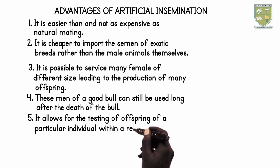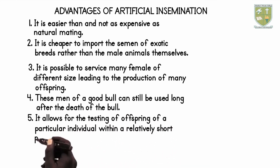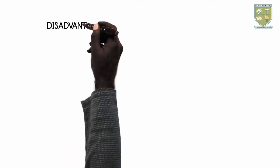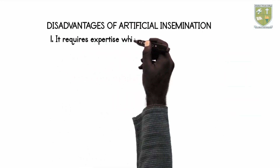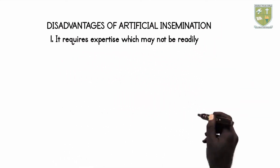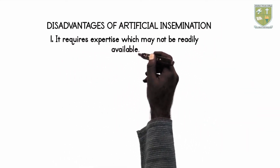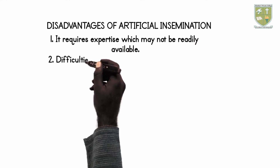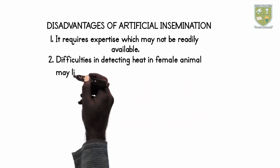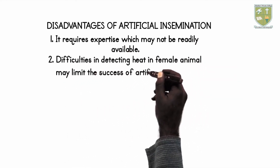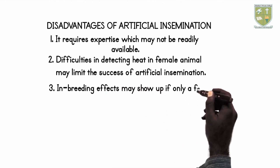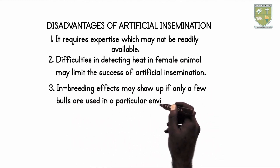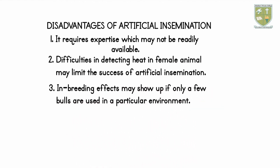4. The semen of a good bull can still be used long after the death of the animal. Disadvantages of Artificial Insemination: 1. It requires expertise which may not be readily available. 2. Difficulties in detecting heat in female animals may limit the success of artificial insemination. 3. Inbreeding effects may show up if only a few bulls are used in a particular environment.